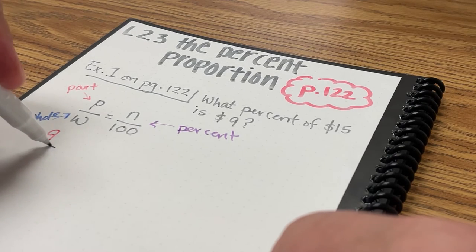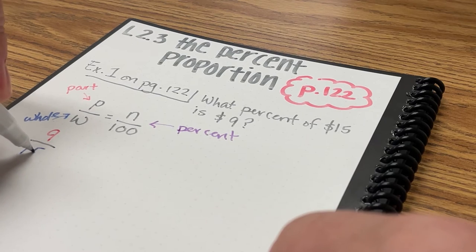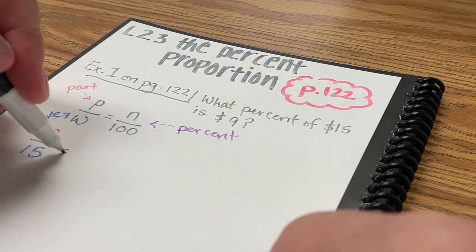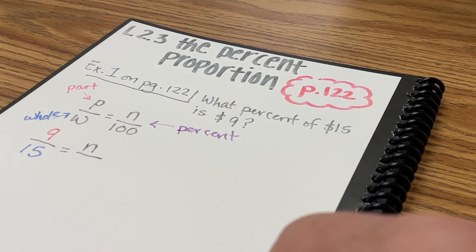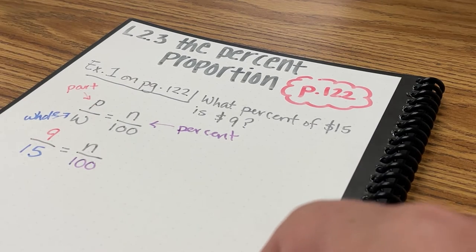So now what I'm going to do is I'm going to plug in the numbers that I know. I know that 9 is the part, it's part of 15, 15 is the whole. What I don't know is the percent, and I'm going to leave that as the variable n over 100.